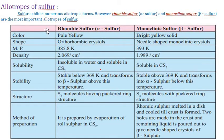Sulfur shows two main allotropes: rhombic sulfur (alpha sulfur) and monoclinic sulfur (beta sulfur). A chart illustrates the differences between these two allotropic forms of sulfur.